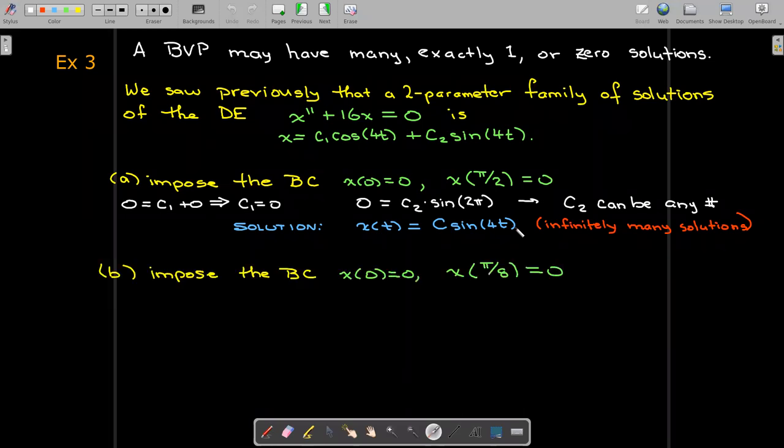Well, let's work on some different boundary conditions. We're going to still maintain that when t equals 0, x will equal 0. But now we're going to enforce that x at π/8 has to equal 0. So if I multiply 4 times π/8, I'm going to get π/2.